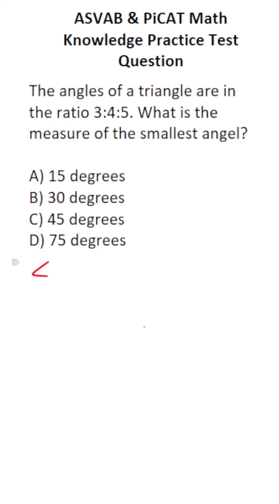For this one, you have to know that triangles always have three angles, and those three angles always add up to 180 degrees. Since our angles have a ratio of 3 to 4 to 5,